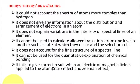The next drawback is that it does not explain variations in the intensity of spectral lines of an element — that is, about the brightness and darkness of a spectral line. Some lines were more intense and some lines were dark, so it could not account for the intensity of spectral lines.